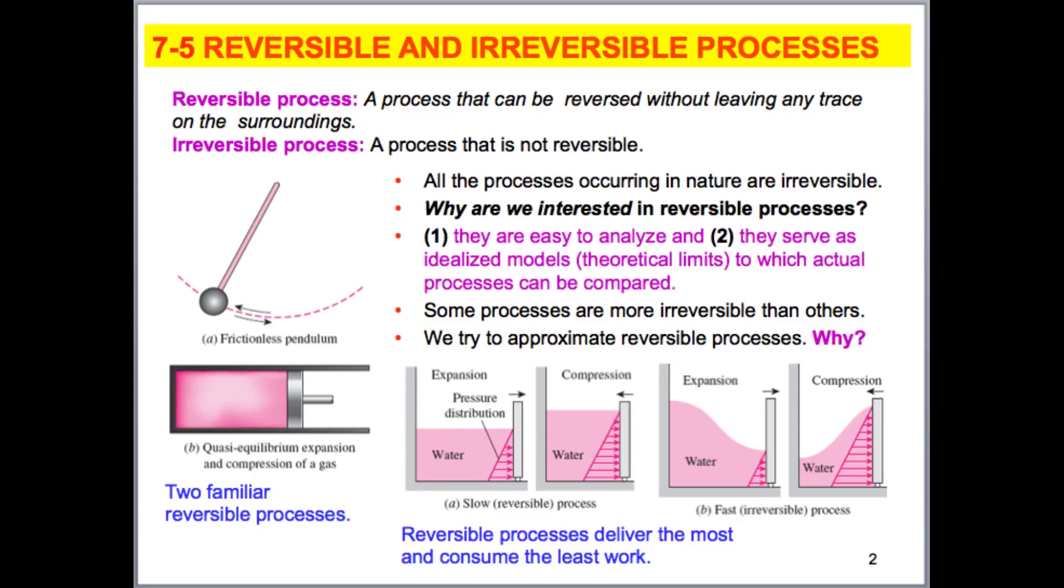Next thing I'd like to define are reversible and irreversible processes. Reversible processes are basically processes that don't have losses occurring in them, and they're kind of a model that we're going to be looking at to try to model actual systems. You may think, why do we bother with them if actual processes are irreversible?